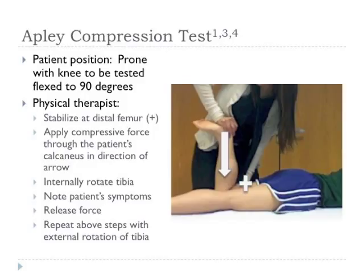For the Apley compression test, the patient is positioned prone with the knee to be tested flexed to 90 degrees. The physical therapist stabilizes with one hand at the distal femur and provides a compressive force through the calcaneus with the other. Maintaining this compressive force, internally rotate the tibia and note patient symptoms, then release. Repeat with compressive force through the calcaneus while externally rotating the tibia, noting patient symptoms. This test places a compressive load on the tibiofemoral joint, and with the addition of tibial internal and external rotation, different aspects of the menisci are stressed, potentially reproducing meniscal injury symptoms.